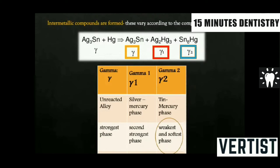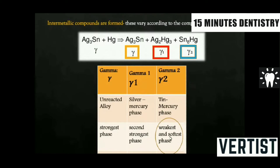In the low copper conventional alloy, the final reaction gives us gamma (the original unreacted particles), gamma-1 (silver and mercury), and gamma-2 (tin and mercury). The unreacted alloy particle — gamma — is the strongest phase. Gamma-1, silver and mercury, is the second strongest phase. And gamma-2, tin and mercury, is the weakest and softest phase. That is why amalgam restorations were failing.